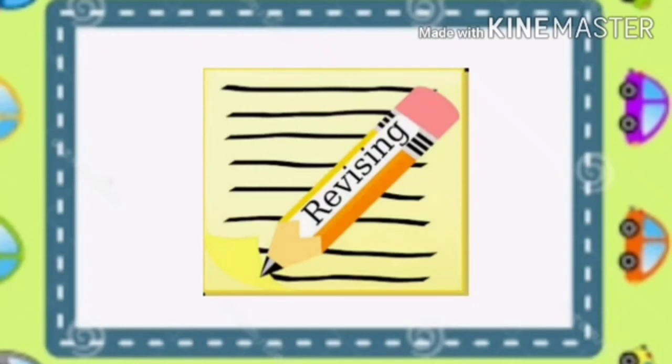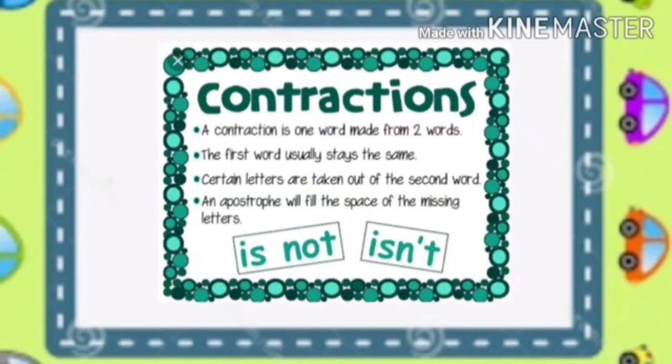Let's revise what we learned in this lesson. A contraction is one word made from two words. The first word usually stays the same. Certain letters are taken out of the second word. An apostrophe will fill the space of the missing letters. For example, is not becomes isn't.